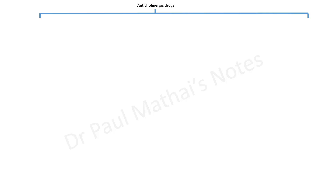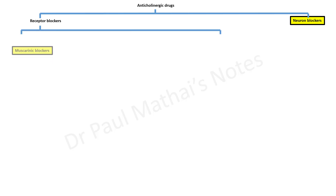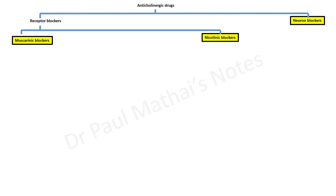Anticholinergic drugs can broadly be classified into receptor blockers and neuron blockers. The vast majority are receptor blockers, which include muscarinic blockers and nicotinic blockers. And again, the vast majority of anticholinergic drugs are muscarinic blockers.